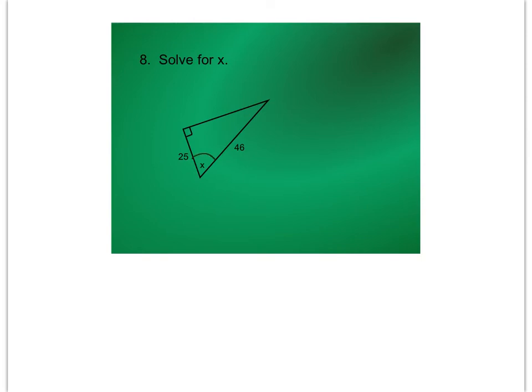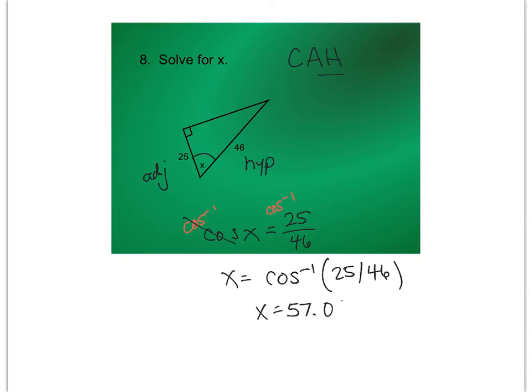For number eight, here's our angle we're looking for. The 25 is adjacent, the 46 is hypotenuse. If you think about SOH CAH TOA, adjacent and hypotenuse go with CA. You're going to do cosine of X equals 25 over 46. You are going to need to do the inverse cosine to get X by itself. X is going to be the inverse cosine of 25 divided by 46, which is 57.08 degrees. Watch your rounding. You look at the number that comes after it. If it's 5 or higher, you round that number up. If it's 4 or lower, then you leave it alone.